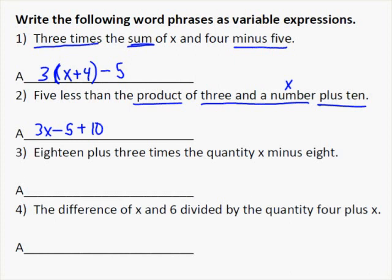Number 3 says 18 plus 3 times the quantity x minus 8. You've got 18 plus something, so that's pretty easy. Then it's 3 times the quantity, which means 3 times parentheses something. What you're taking the quantity of is x minus 8, so x minus 8. That's what your answer looks like.